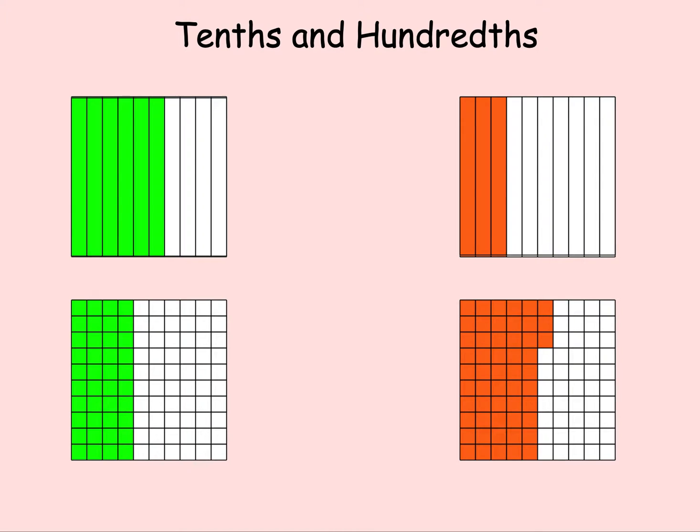Let's look at comparing tenths and hundredths. We'll start with our green example here. In our green example, we have six tenths and we have forty hundredths. Now, sometimes forty hundredths appears to be larger than six tenths, but what we have to remember is...